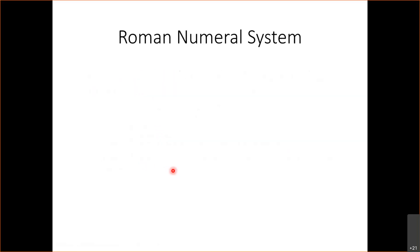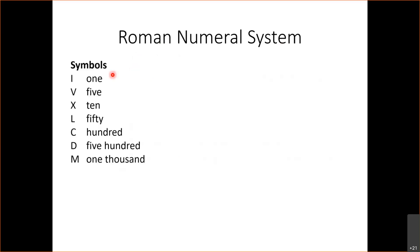One example of a numeral system is the Roman numeral system. It consists of a set of symbols — I represents the value one, V represents five, X represents ten, et cetera — and also a set of rules for combining these symbols together to create numbers other than the ones those symbols individually represent.